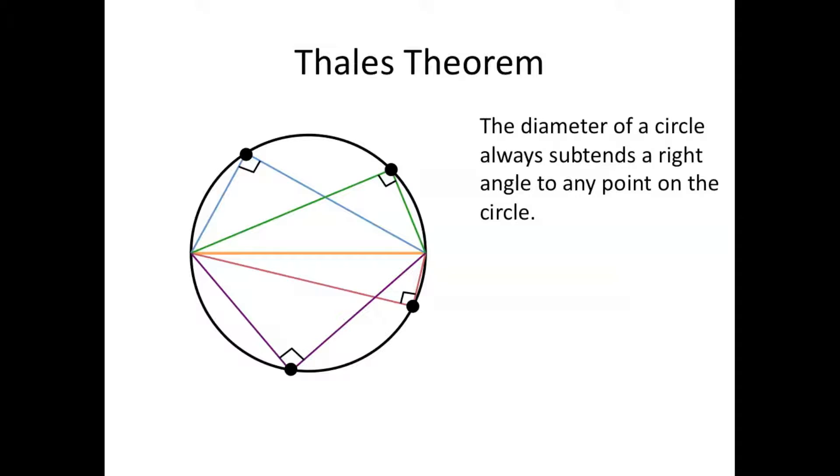So how do we prove this? Well, let's start off with our circle and we'll mark the diameter. This will be our center point and we'll call it O, and the two end points of the diameter we'll call A and B. And now we're going to pick a random point along the circle and call that C.